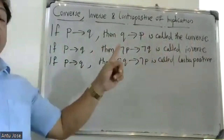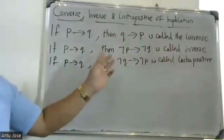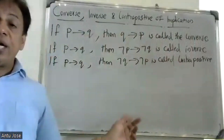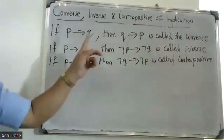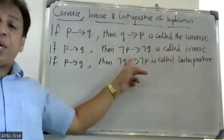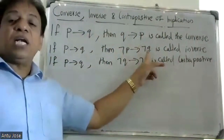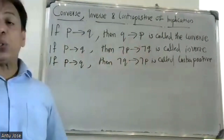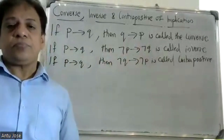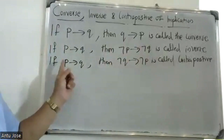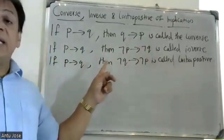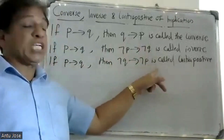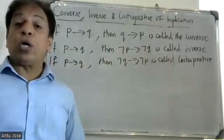To summarize: given P conditional Q, then negation P conditional negation Q is the Inverse, and negation Q conditional negation P is the Contrapositive.